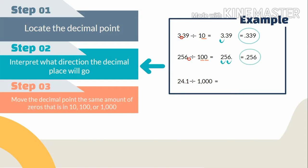Third example: 24.1 divided by 1000. Step one — locate the decimal point; here is the decimal point. Step two — the decimal place goes to the left. In thousand we have three zeros — one, two, and three — so we move the decimal point three places to the left. The answer we get is 0.0241.